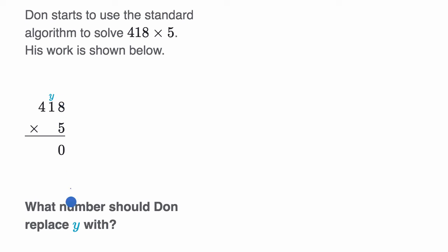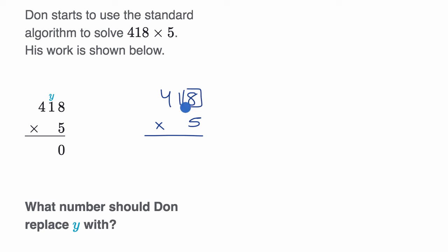The way to think about this — this might confuse you a little bit, because why is there a y there in the first place? But what they're really trying to get at is making sure we understand what Don is doing with the standard algorithm. The way we would tackle 418 times five: eight ones times five ones is going to be 40 ones. 40 ones we could write as zero ones and four tens. That looks like the place where Don stopped computing — he's partially computed it so far. Just by doing that, we know y should be four, representing four tens.